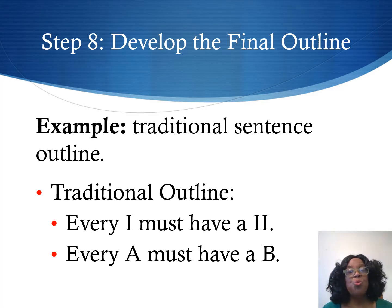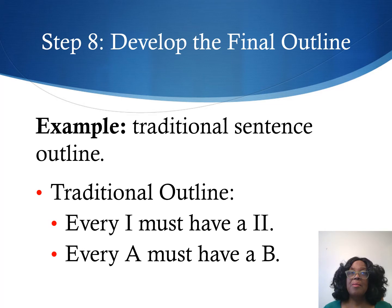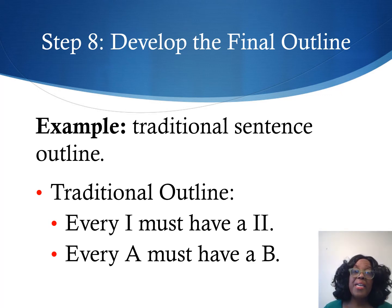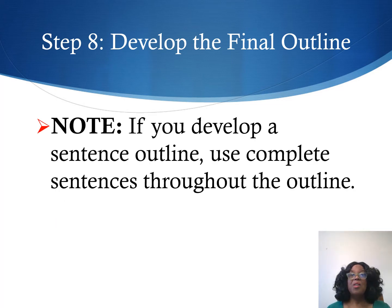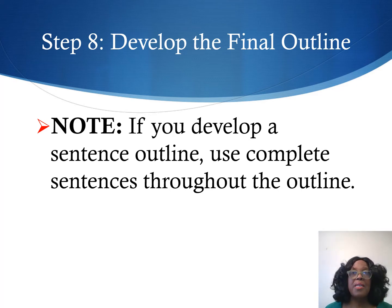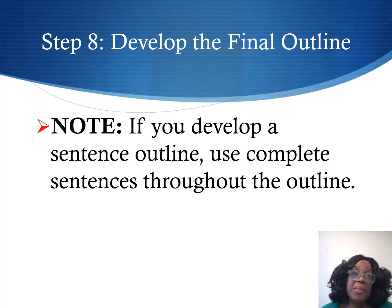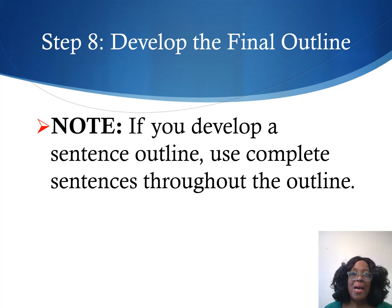Also, you want to use the traditional elements of the sentence outline. This means that every one will have at least a two, and that every A will have a B. If you develop a sentence outline, use complete sentences throughout. I have found that those very sentences will possibly become the topic sentence for each one of my paragraphs. Take your time as you write and develop the sentence outline.